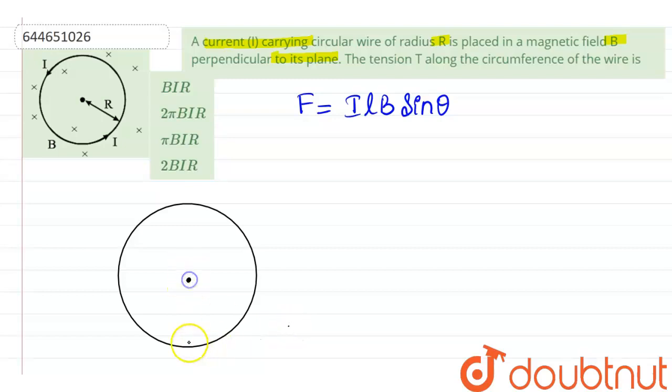So let's say this is the center. I am considering an element here such that the length of the element is DL and this length subtends an angle theta at the center.